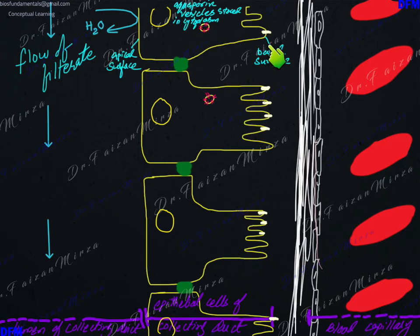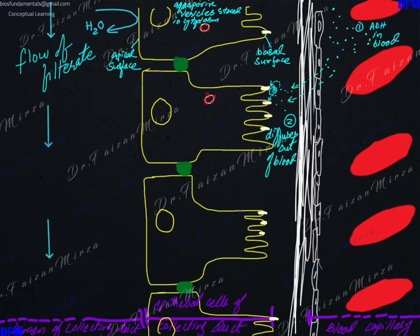On the basal surface there are the receptors of the hormone ADH. ADH hormone travels in the blood, diffuses out of the capillary, and interacts with its receptor on the basal surface. Once ADH binds to its receptor, once receptor occupancy is achieved, this will transmit the signal inside the cell, and we see an enzyme become activated called phosphorylase kinase.